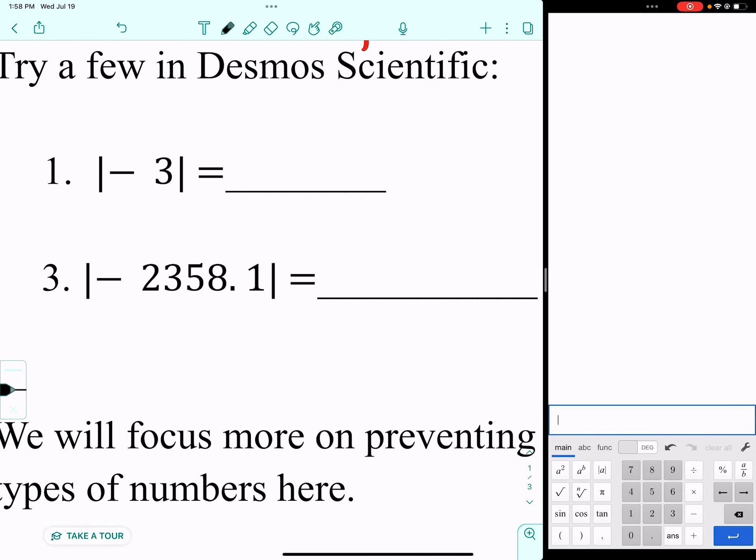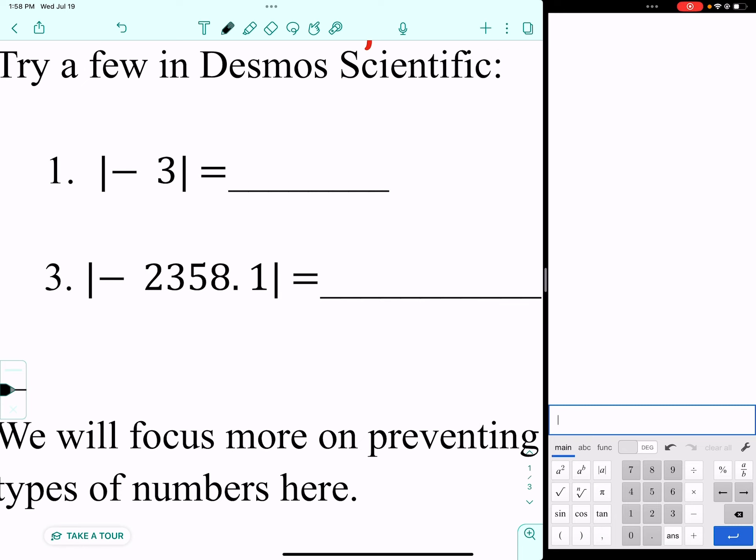If you get confused, you can always go over to your handy-dandy calculator. If I want to type this into Desmos, I'm going to start with my absolute value button. It looks like an A with sticks on either side of it, right above the pi button. I'm going to open up my absolute value bars, do a negative 3, and close the absolute value bars. You can see over there on the right side, the answer is a positive 3.